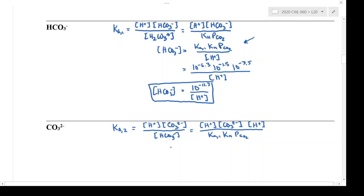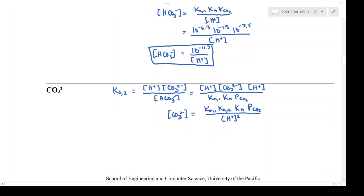Now I'm going to rewrite this to get an expression for carbonate. So carbonate is equal to Ka1 Ka2 Kh pCO2 over H plus squared. Again, you can see that the carbonate concentration is not constant but is a function of pH.